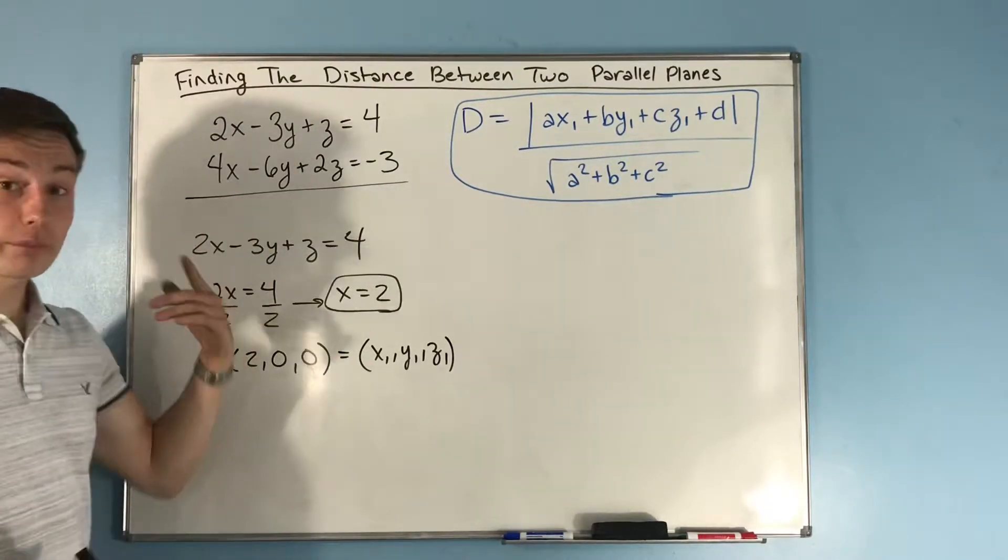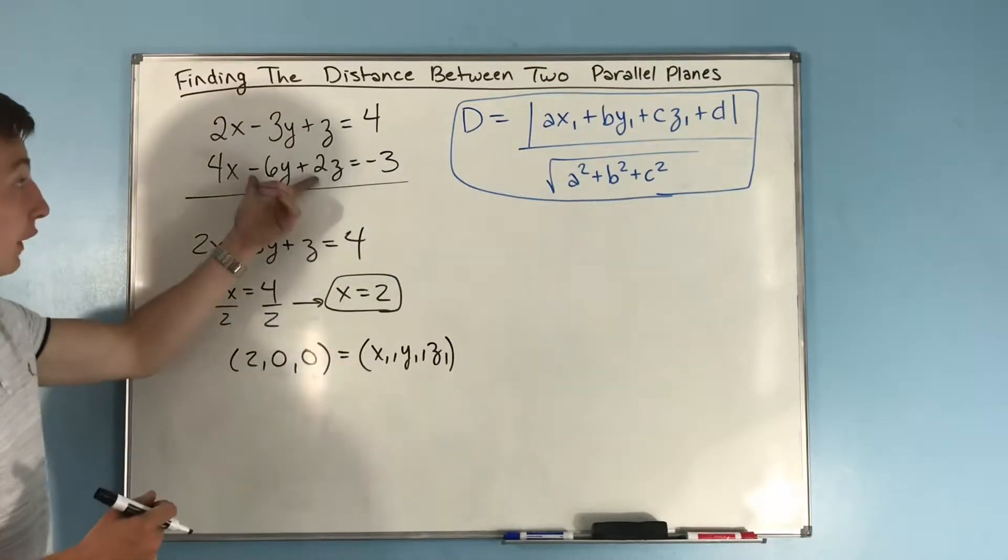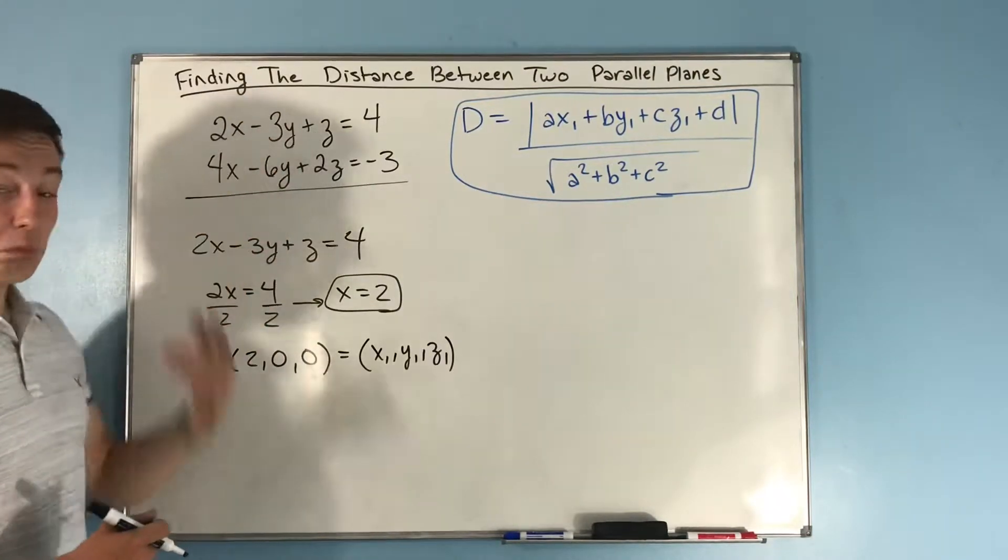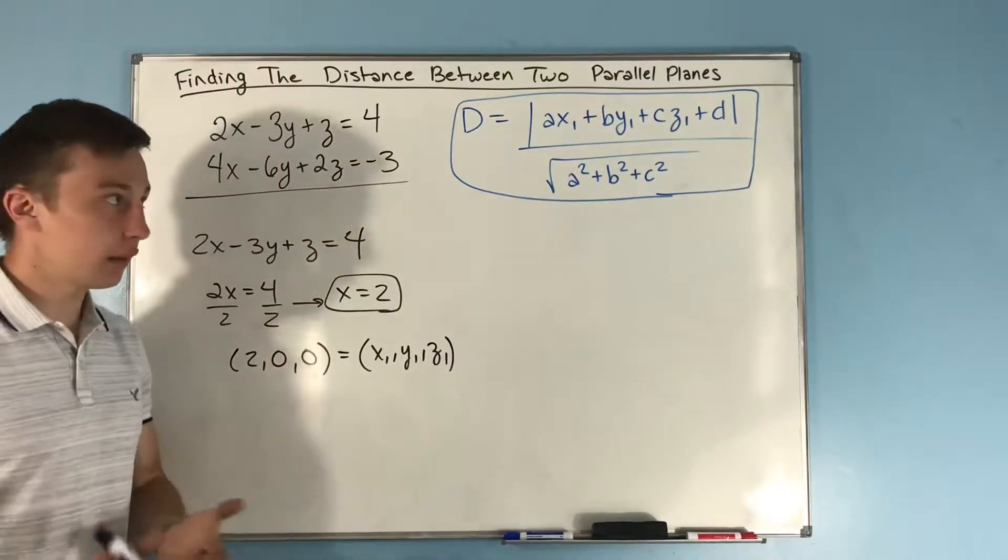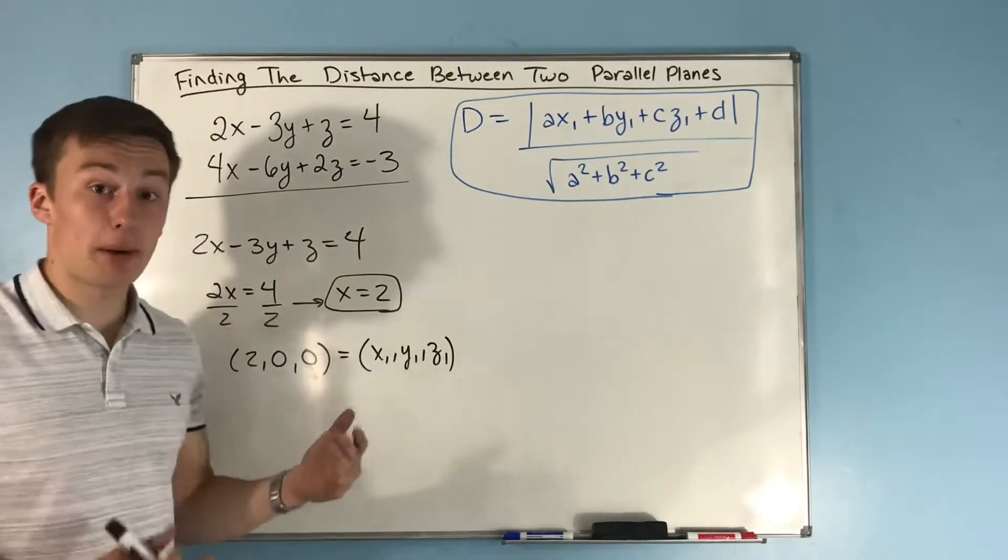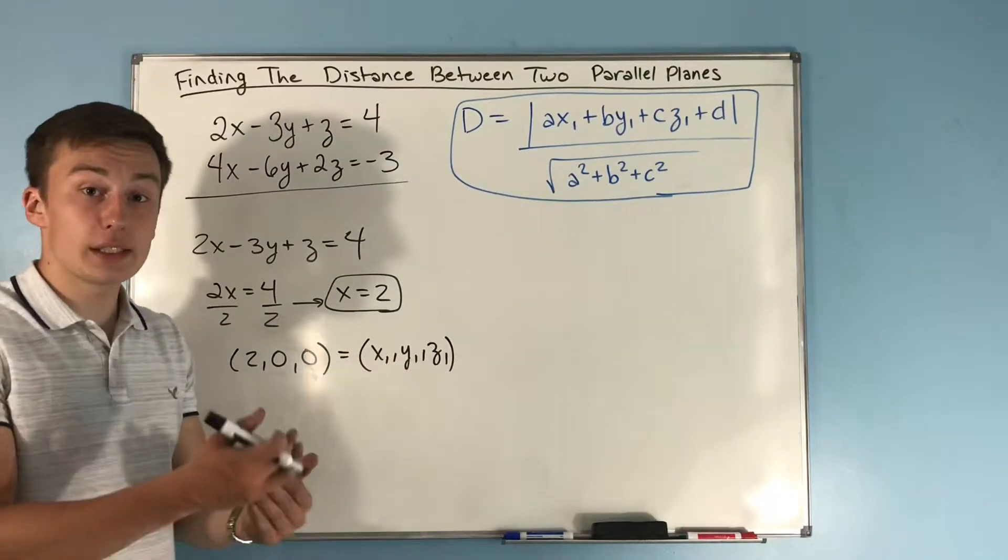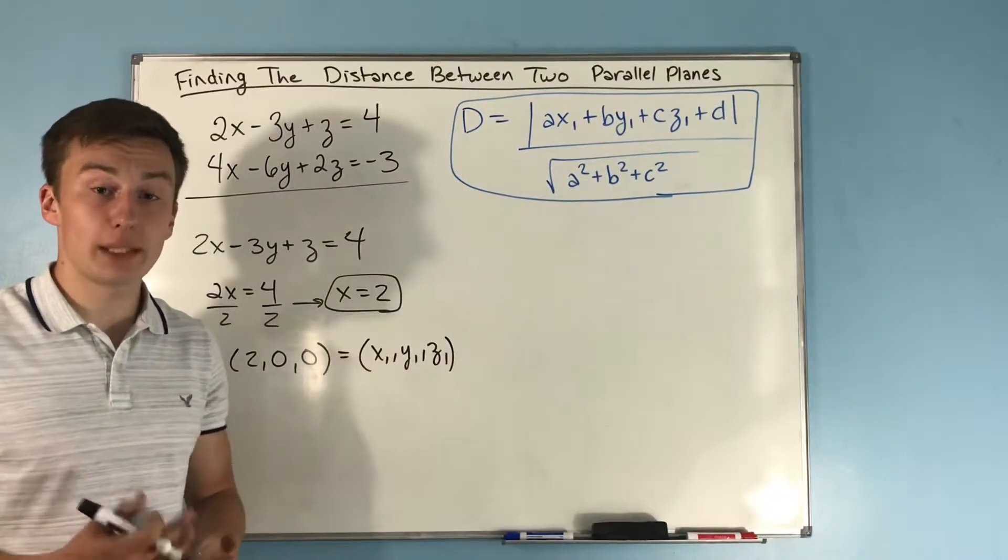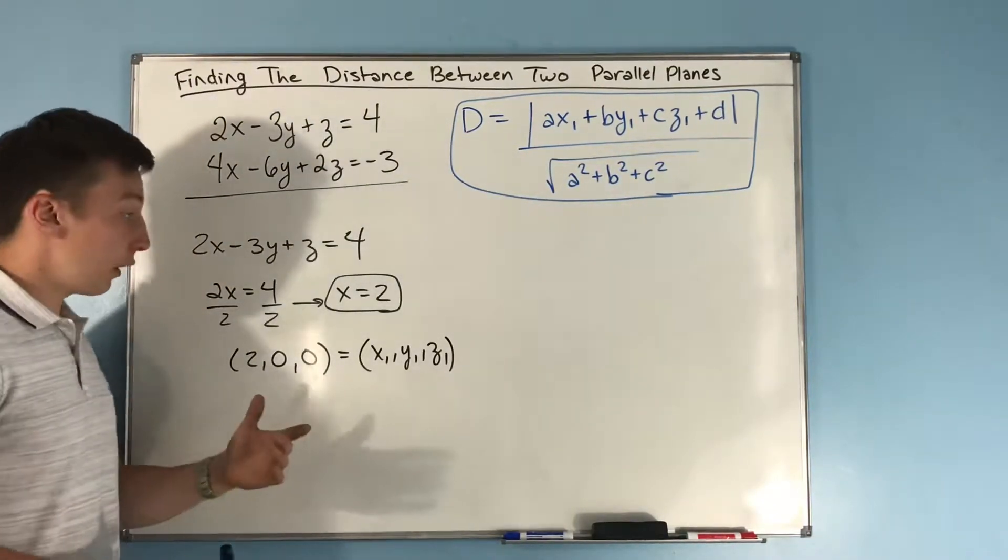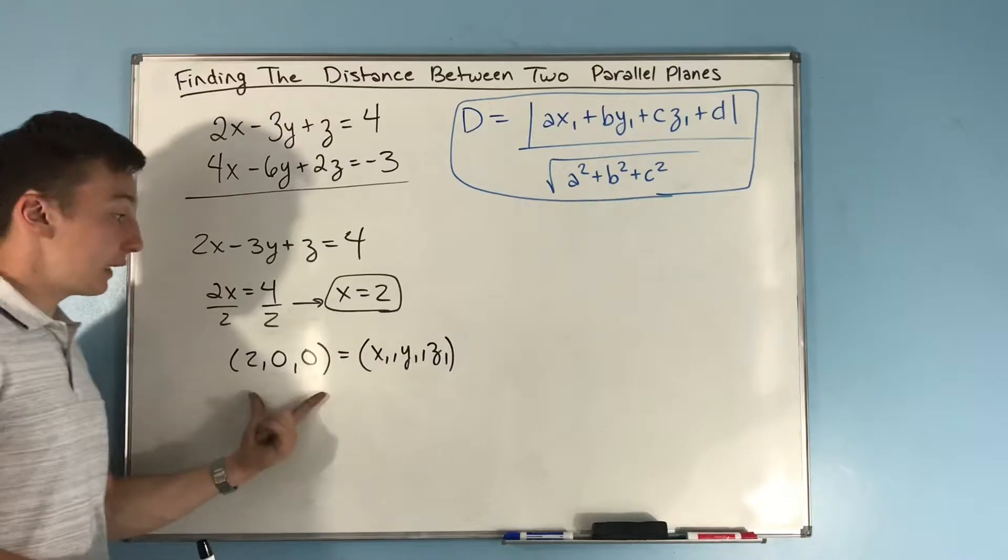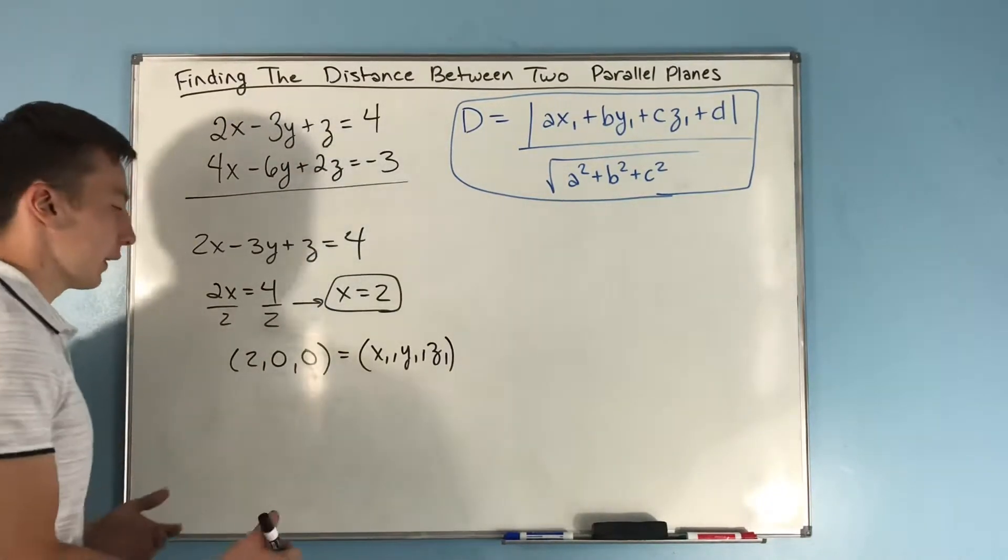Now you have a point on this plane, and you're going to find the shortest distance from this plane to that point you just found on the other plane. That literally gives you the distance between the two parallel planes. We're able to do that because the planes are parallel, so the distance is always the same. We're finding the distance from this plane to this specific point on the other plane, and that's how we solve this.